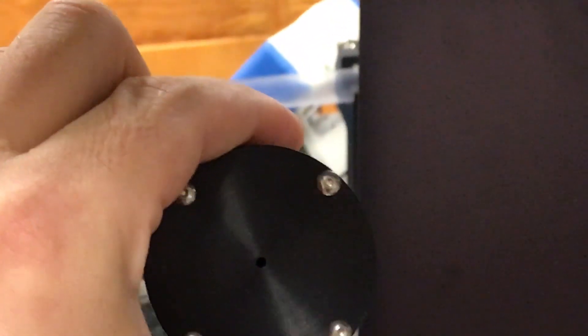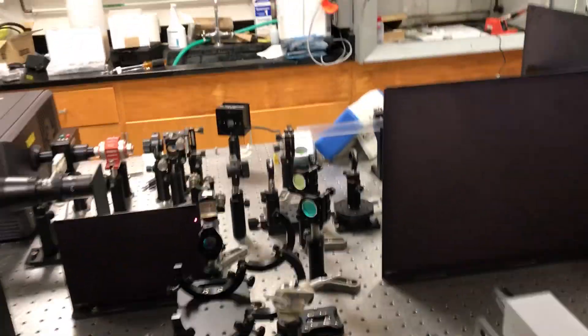So I've got this handy dandy alignment tool from Canoptix, which basically is just a hole in a tube. Am I zoomed in right now? Yeah, there we go.